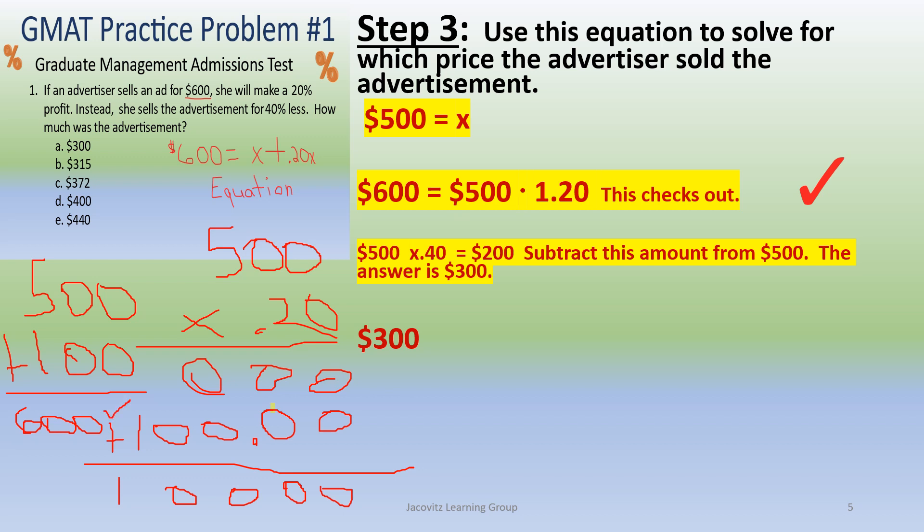That checks off. Now what we need to do to find out how much he actually sold it for. If we take this amount, this $500, because that's the amount we want to have, you would do 500 times 40%. 5 times 4 is 20. Let's go ahead and do the long division. And then 5 times 4 is 20. You're adding, so you can go down, but there's your decimal here, so it's $200.